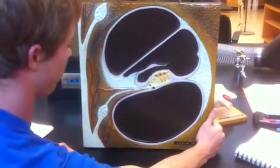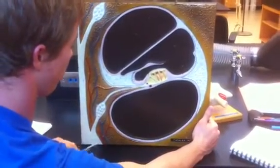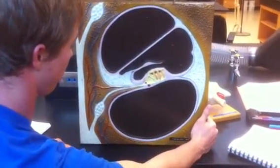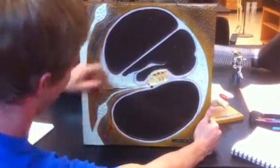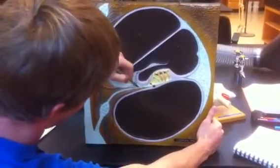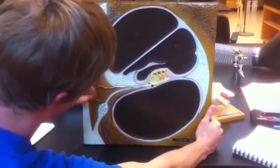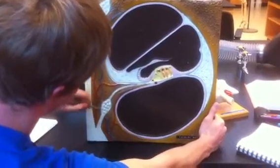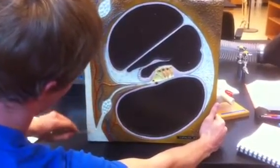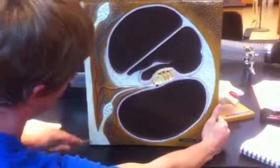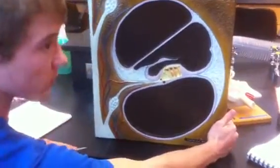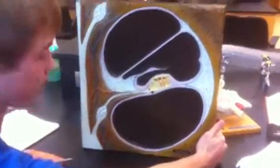And the vestibulocochlear nerve. This is the nerve axon, the ganglia, and it travels out here. That's a wrap.